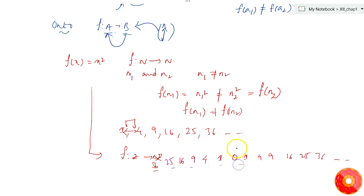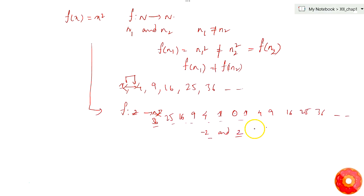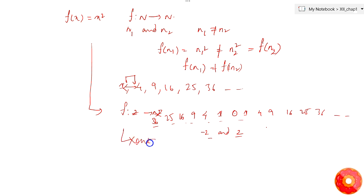We can see that if we take two values like minus 2 and plus 2, both will have the same image — that is 4. Two different elements have the same image, so the given function f mapping from integers to integers is not a one-one function.